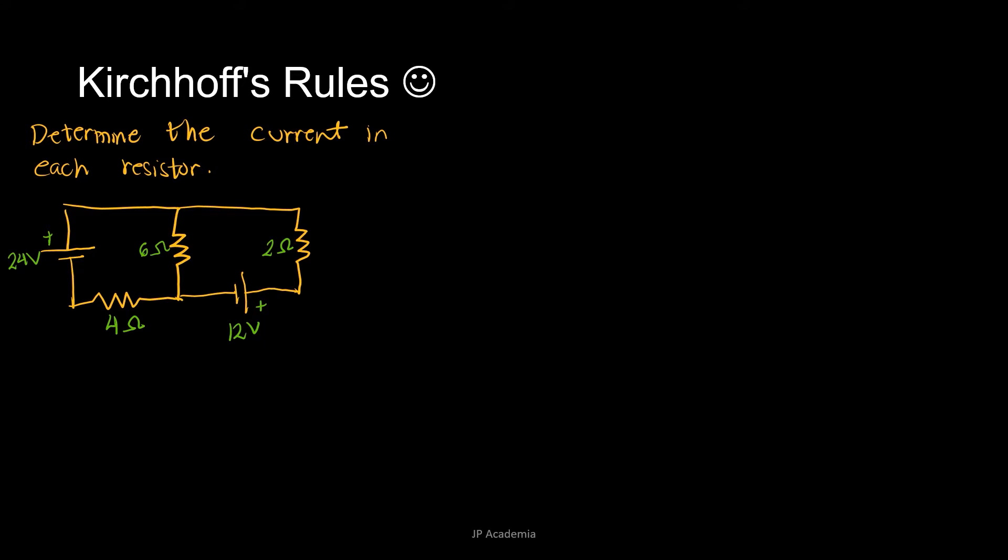As you can see, we have two voltage sources here. We have 24 volts with the positive terminal on top, and then we have this 12 volts battery on the bottom. And we have these three resistors. So how do we solve this?